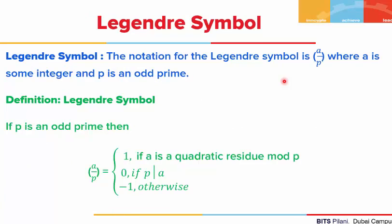Now let's define the Legendre symbol. Both quadratic residues and Legendre symbols play a very important role in solving quadratic congruences. The notation for the Legendre symbol is (a/p), where a is some integer and p is an odd prime — p cannot be 2. The Legendre symbol (a/p) has three values: it is 1 if a is a quadratic residue mod p, 0 if p divides a, and −1 otherwise.